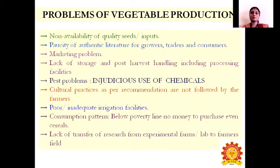The problems of vegetable production include non-availability of quality seeds and inputs required for vegetable production, lack of authentic literature especially for farmers and traders and consumers, marketing problems, lack of storage and post-harvest handling, lack of processing and cold storage facilities, pest problems, non-adherence to cultural practice recommendations by farmers, poor and inadequate irrigation facilities, low consumption among below-poverty-line populations, and lack of transfer of research findings from experimental farms to farmers.